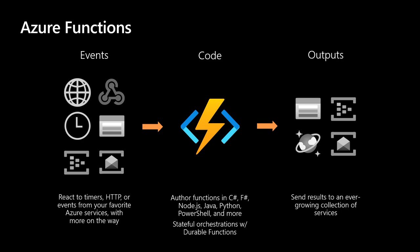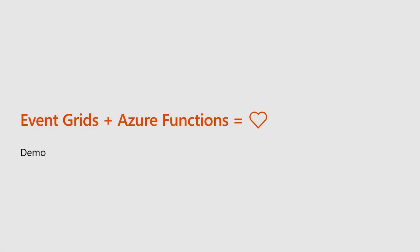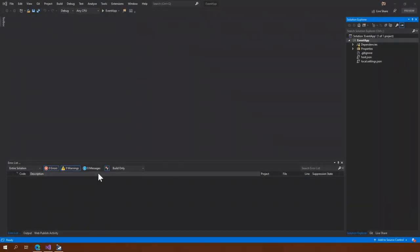Event-driven architecture blows my mind with awesomeness. Gone are the days when we were only building APIs and desktop applications. Let's get started on a demo to show you the potential of Azure Functions. We're going to start with something simplistic and ramp it up. In this demo, we're going to cover Event Grid and Azure Functions. So let's start with Visual Studio, beginning with an empty Azure Function application.